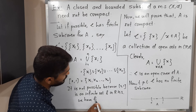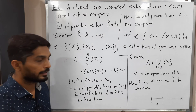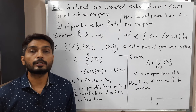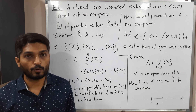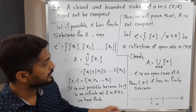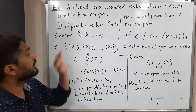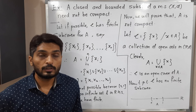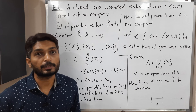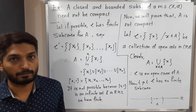We get a contradiction because our assumption was wrong. Our assumption was that script C has a finite subcover, so that is wrong. We should rectify the statement and say script C has no finite subcover.